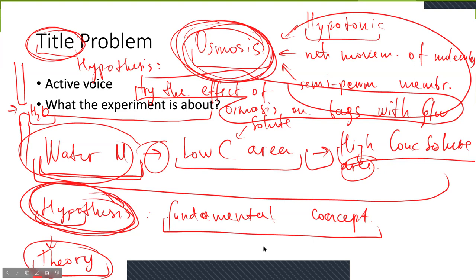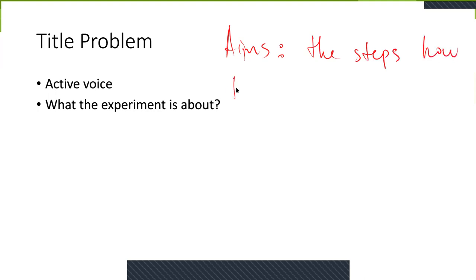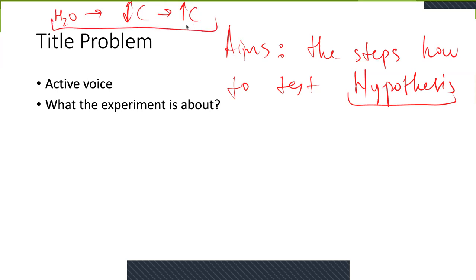This is how aims are different from the hypothesis. Aims are explaining the steps — how to test the hypothesis. So we have the hypothesis, which tells us that water molecules move from low concentration to high concentration areas of solute. How do we test it? The first aim would be to just put a bag of water into a glucose solution.